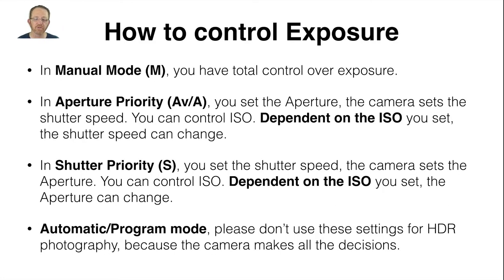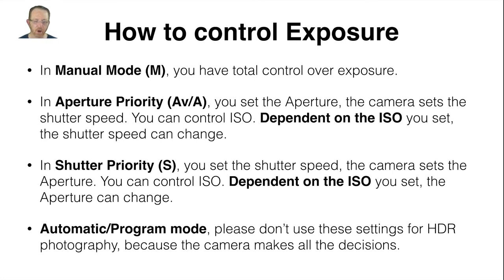How to control exposure: in manual mode you have total control over exposure and can ruin your shot quite easily if you don't know what you're doing. In aperture priority, you set the aperture, the camera sets the shutter speed, and you can control the ISO — the exposure triangle again. In shutter priority, you set the shutter speed and the camera sets the aperture, and you can control the ISO. In automatic program mode, automatic means the camera does the work completely — you have no control. Program mode allows you to move the aperture around or change the shutter speed. Please don't use these settings for HDR because the camera makes all the decisions.